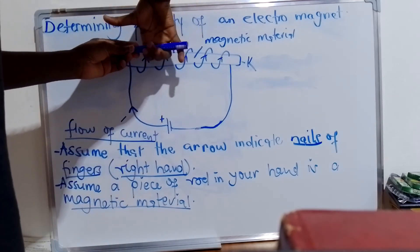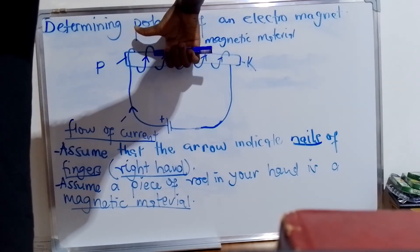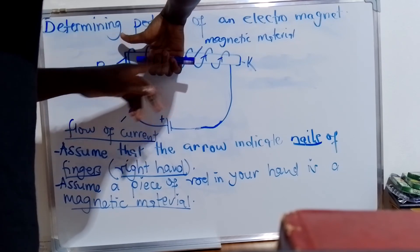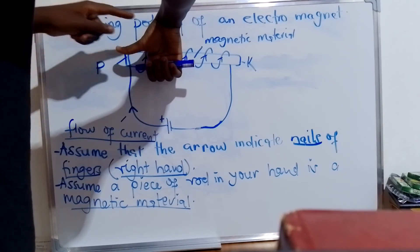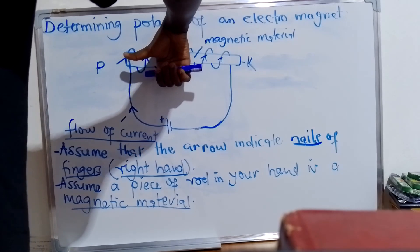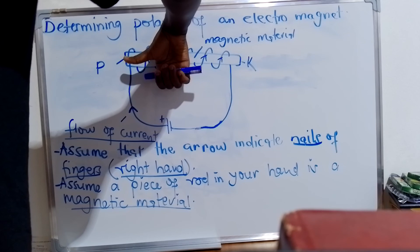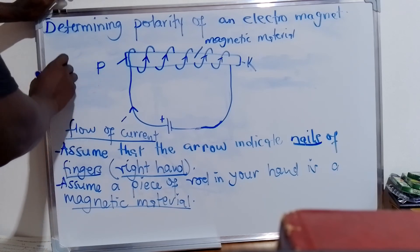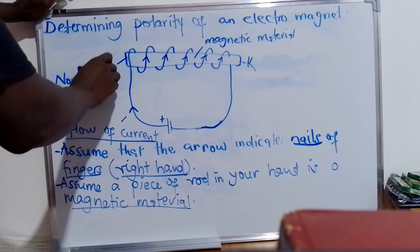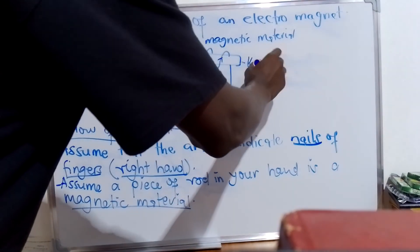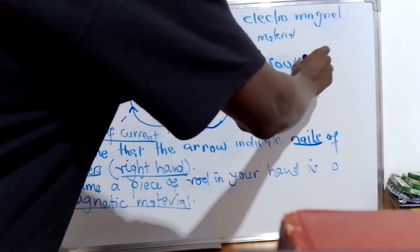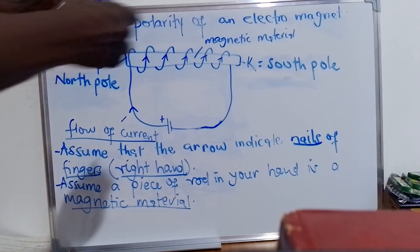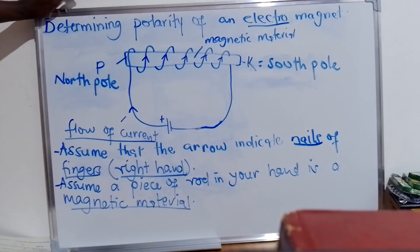This is the way I have to position my fingernails, such that I can see my fingers. They are facing up. I'm using the right hand, and automatically the thumb is pointing this side. Just like in the first case, the north pole is going to be this side. P is going to be the north pole, and K automatically will be the south pole. This is the only way you can determine the polarity of the magnet — this magnet is an electromagnet, the magnet made by use of electricity.